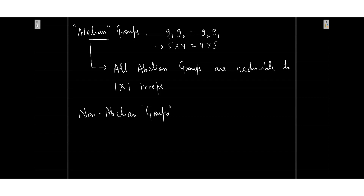For non-abelian groups, this may or may not be true. For non-abelian groups, one has to figure out whether they can be represented by one-cross-one irreducible representations or not. This makes representation theory slightly different for non-abelian groups, because one has to keep figuring out what the irreducible representation will be. In some cases, two-cross-two matrices will be reached and cannot be reduced further — so the irreducible representation may be of dimension two-cross-two.